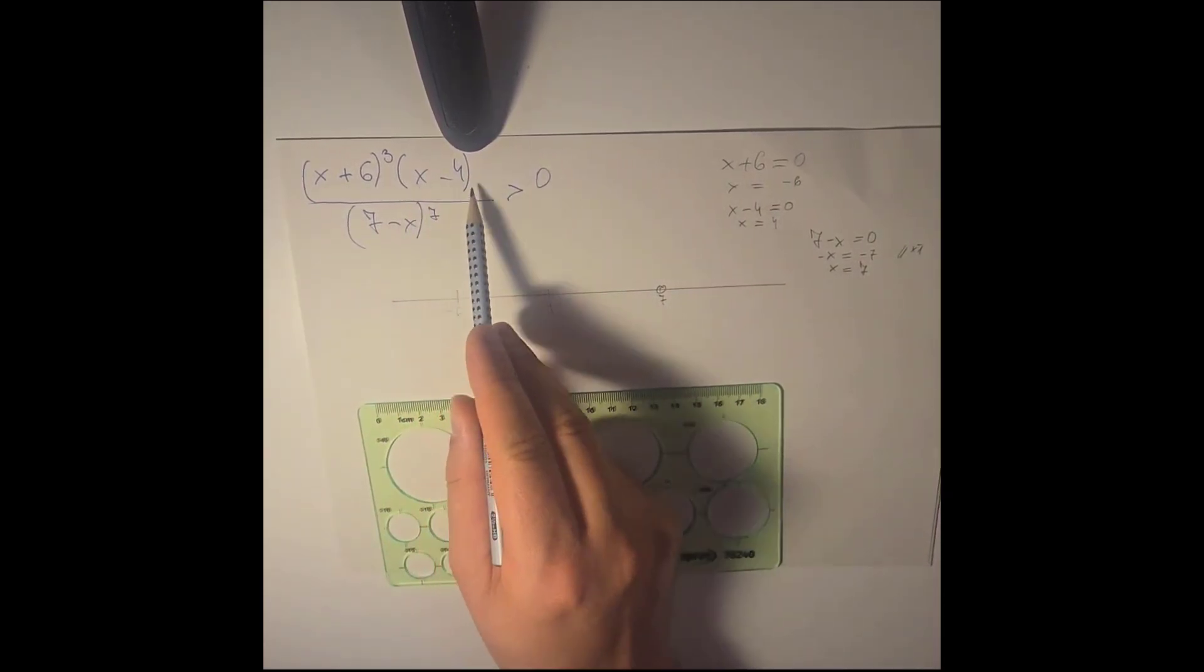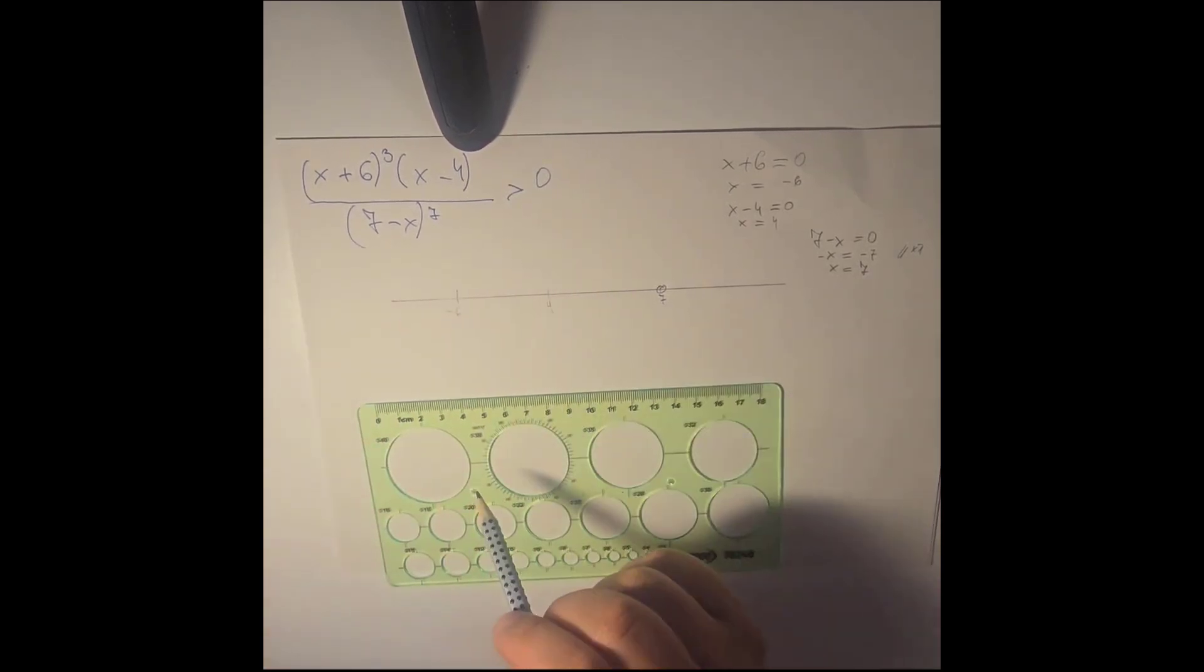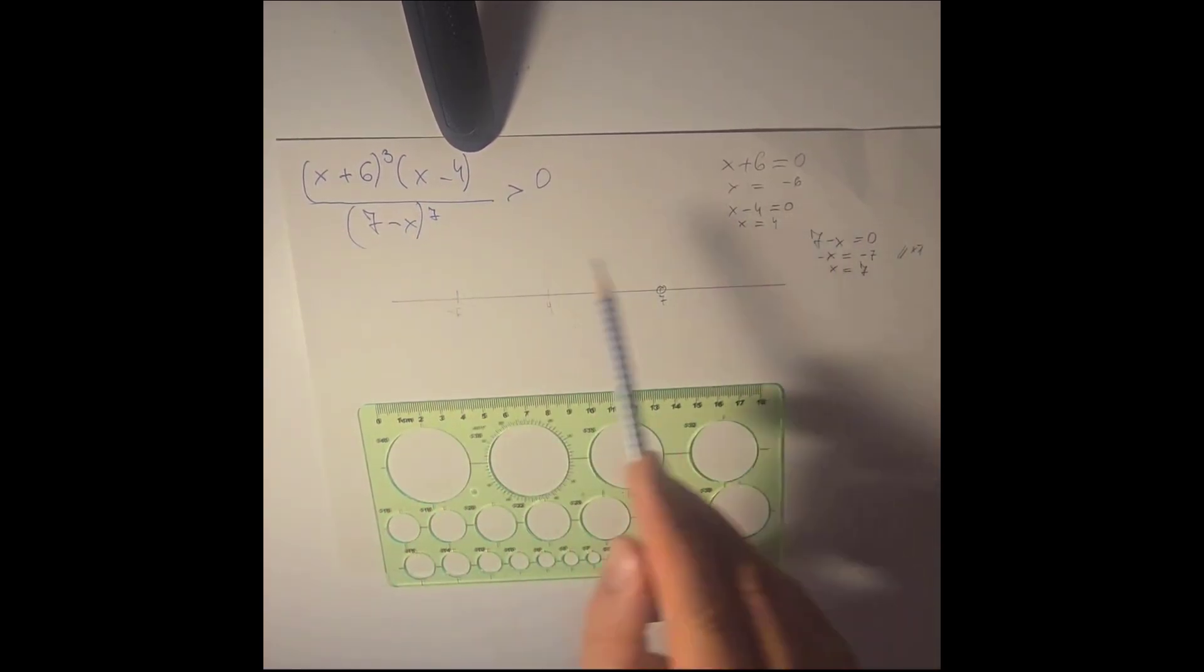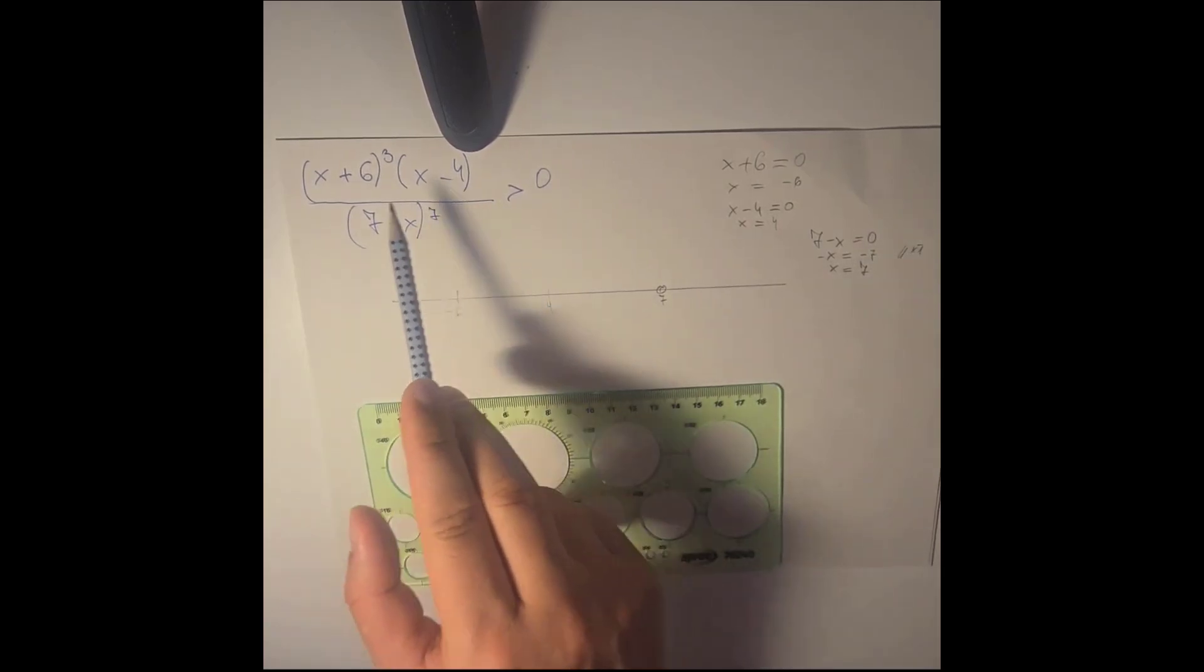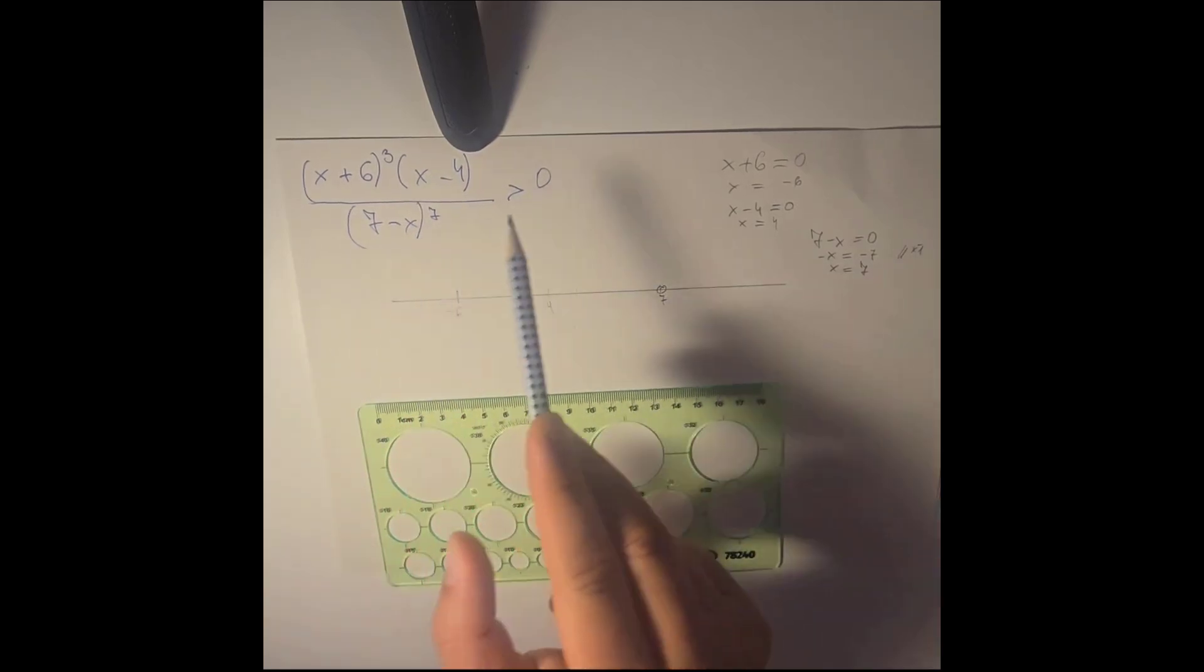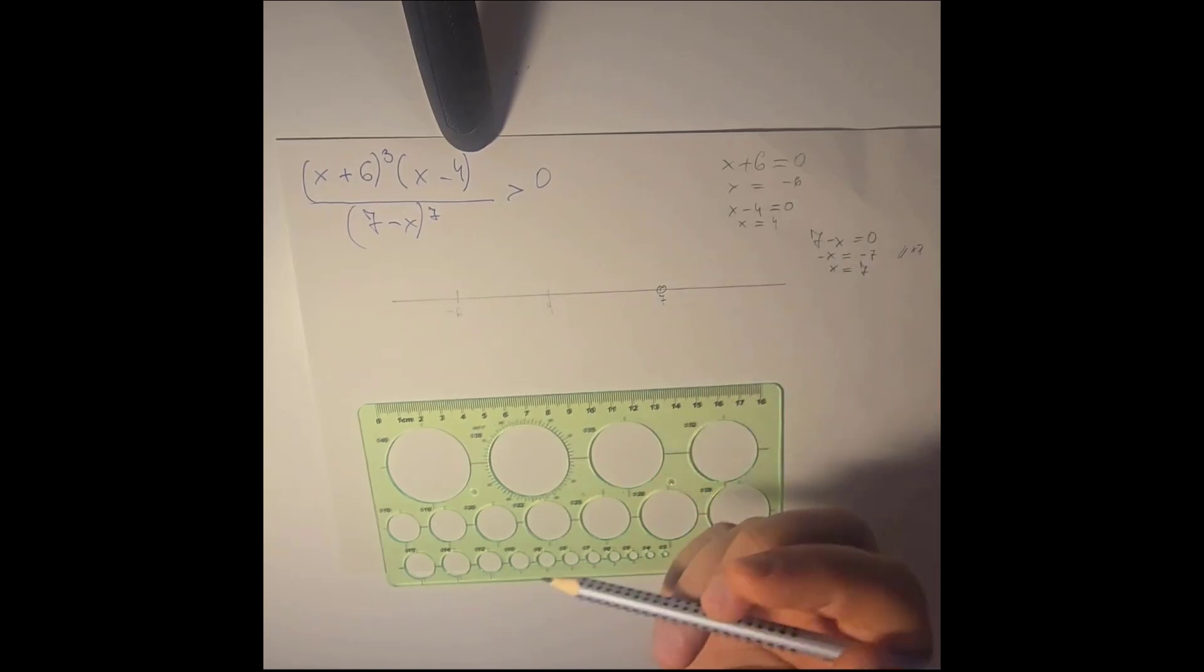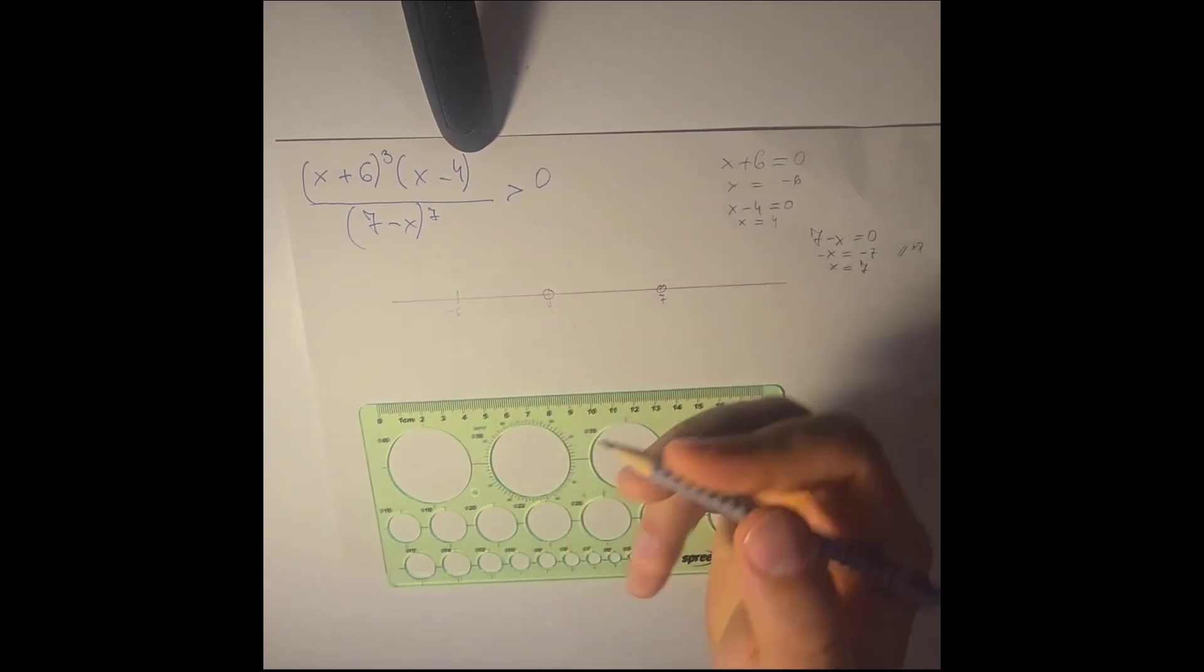What about x minus 4? Should it be allowed? Solving for the interesting point number 4. If we have here 4, so it would be 4 minus 4. It would be 0. So something times 0 divided by something is obviously a 0. So 0 cannot be bigger than 0. This one is also not allowed.